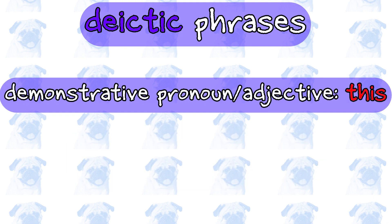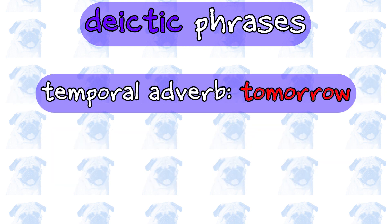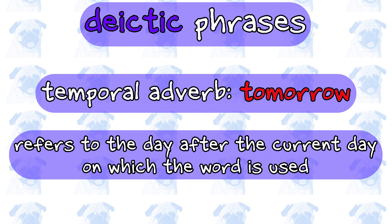The demonstrative word 'this' refers to an object that is in relative proximity to the speaker. And the temporal adverb 'tomorrow' refers to the day after the current day on which the word is used.